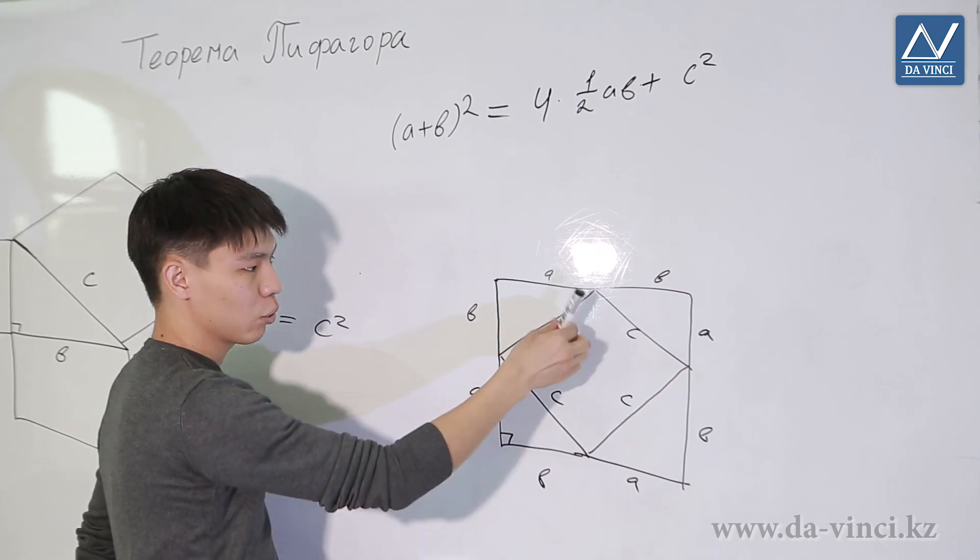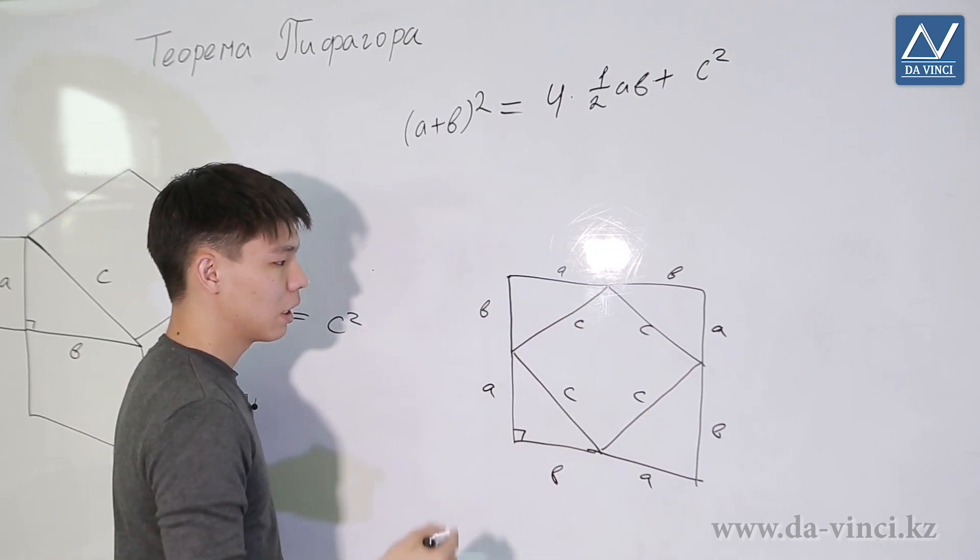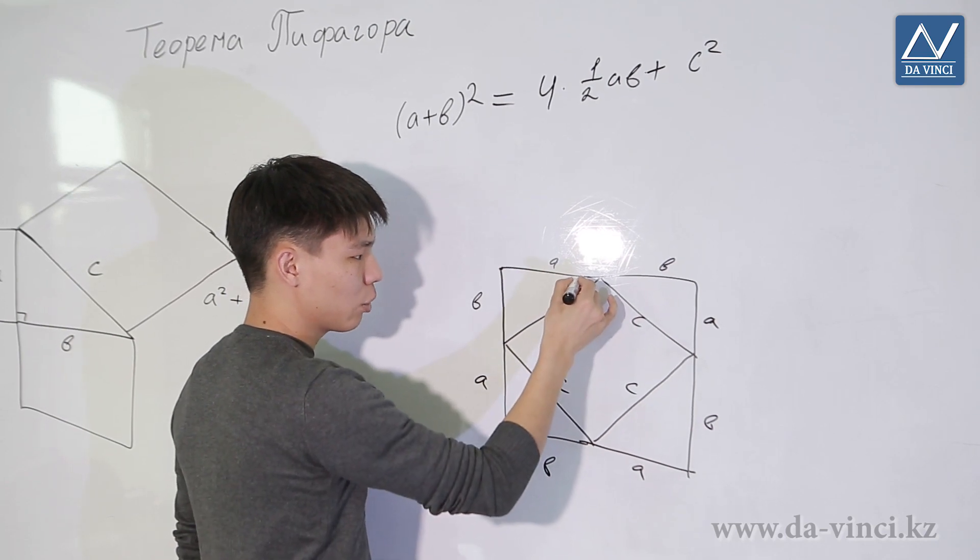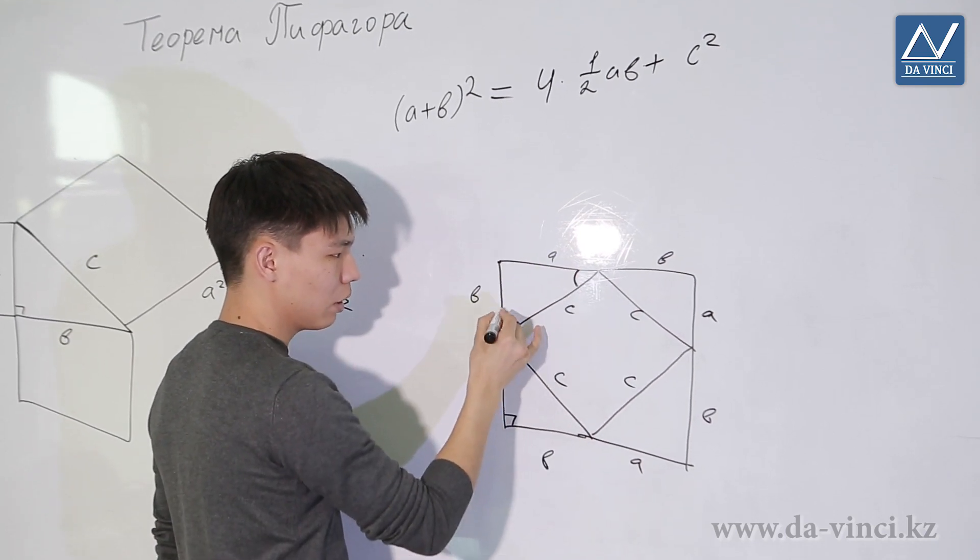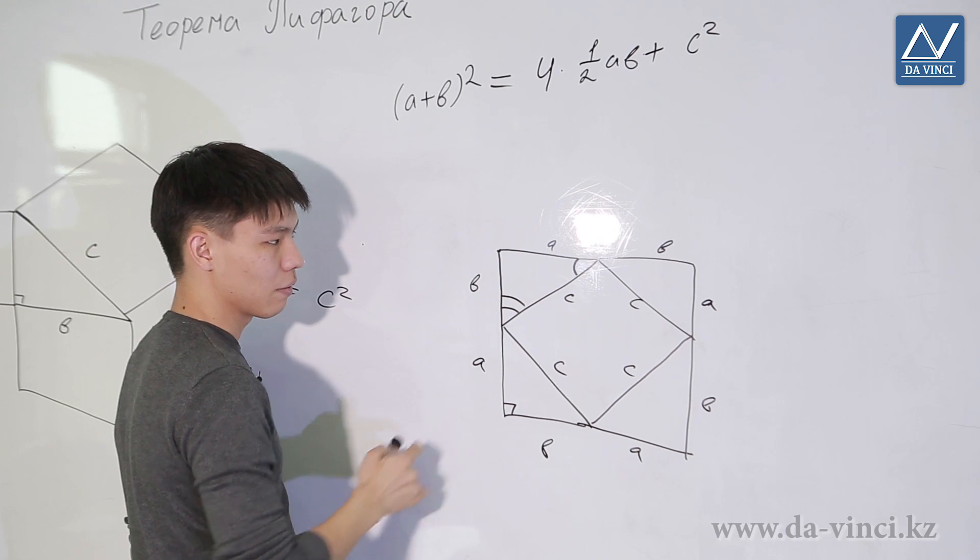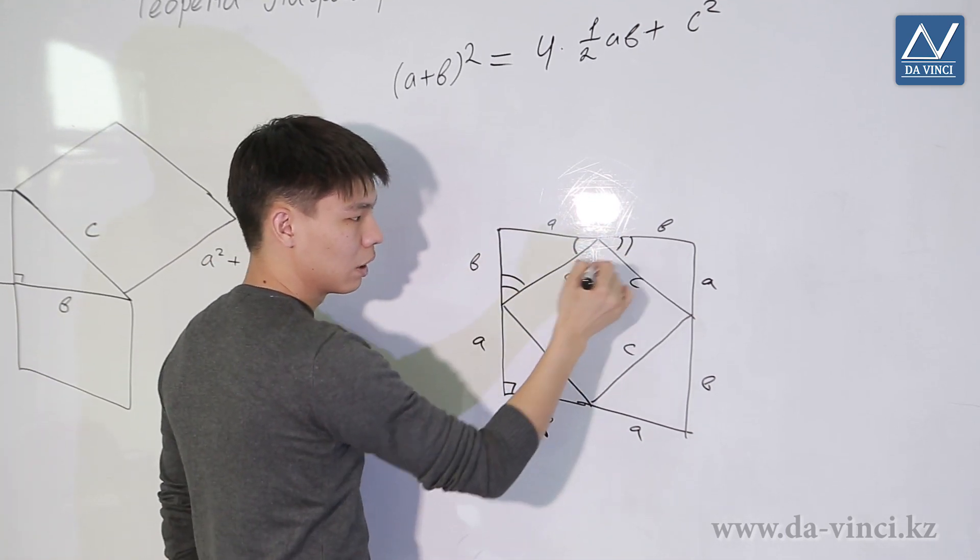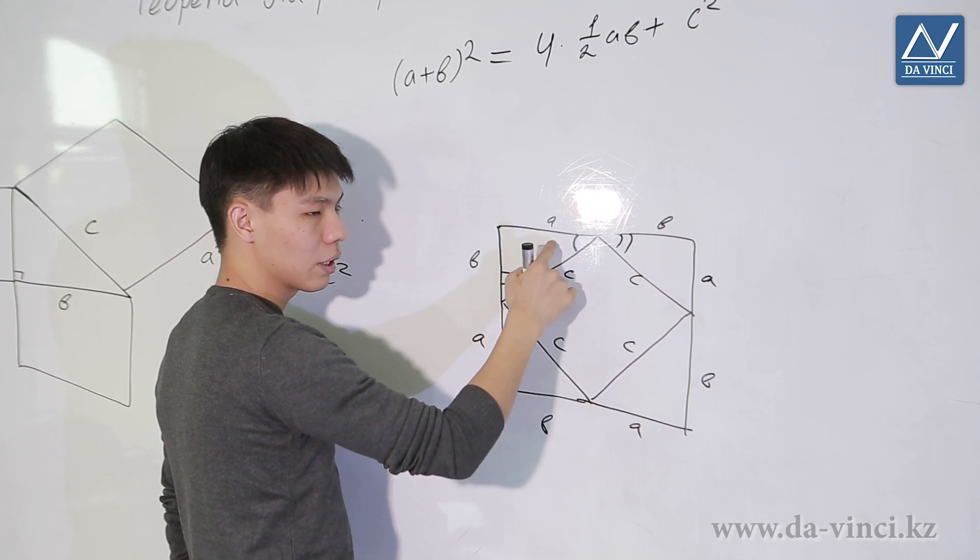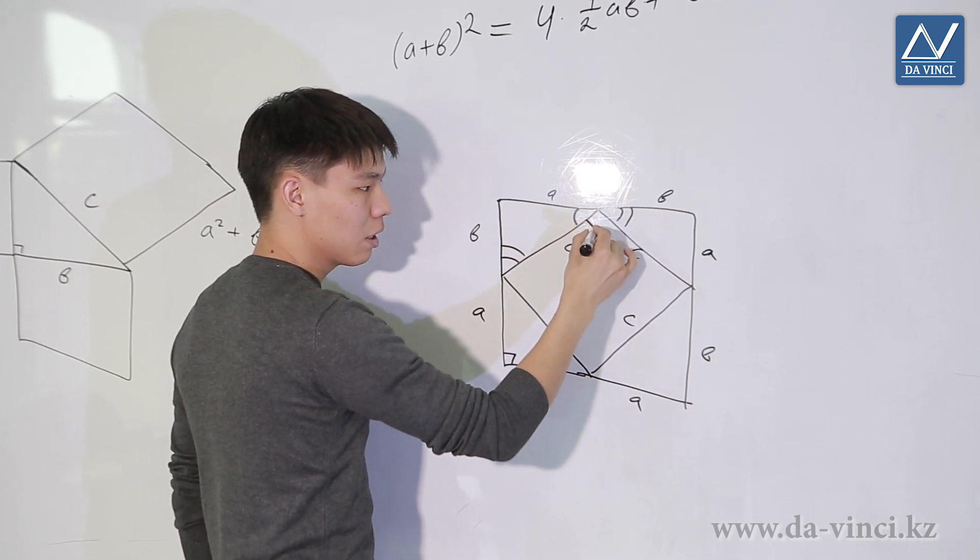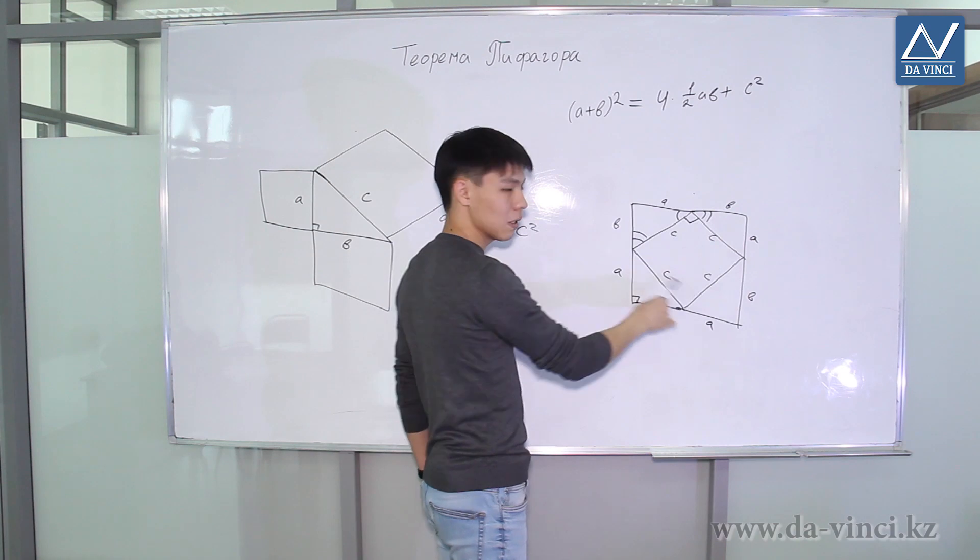If we prove that one angle is a right angle, then all the other angles will be right. How can we prove that an angle is a right angle? We know that this angle plus this angle equals 90 degrees, but these triangles are equal, so this angle is equal to this angle. That is, the sum of these two angles is 90 degrees, which means that this angle is still 90 degrees. So it's really a square.